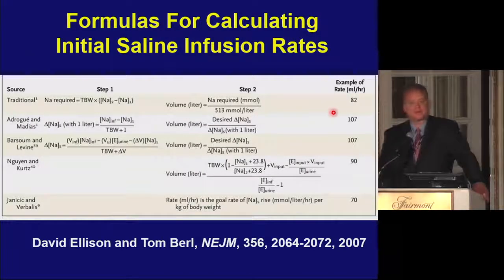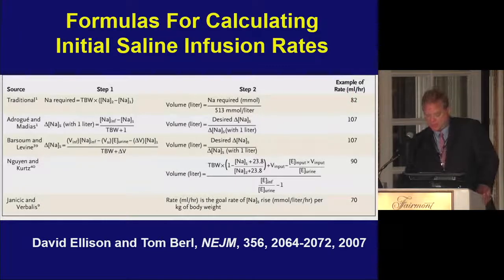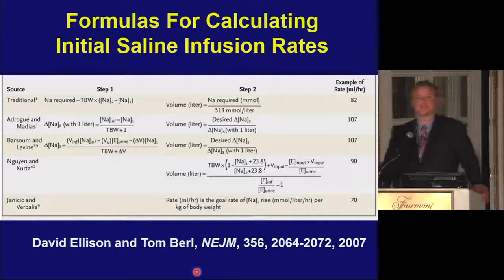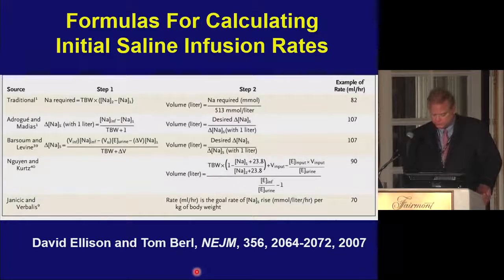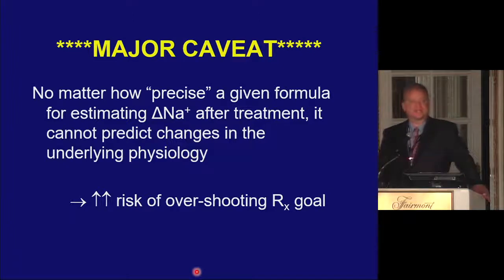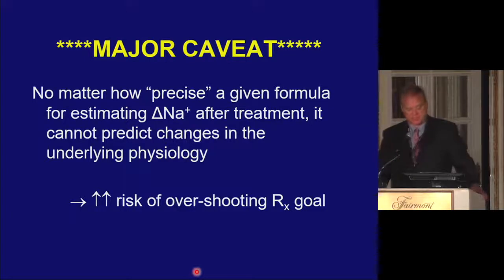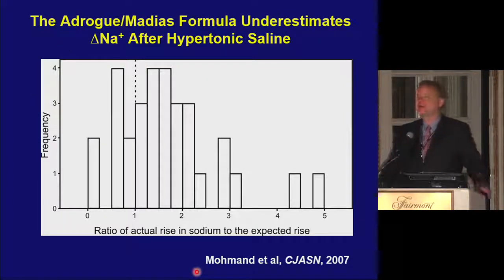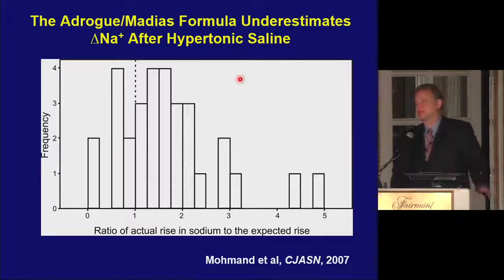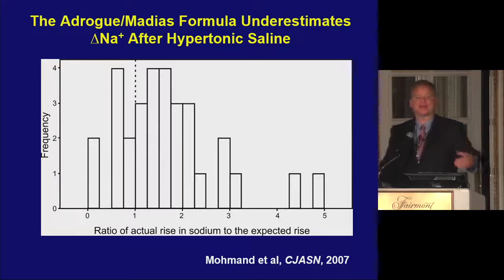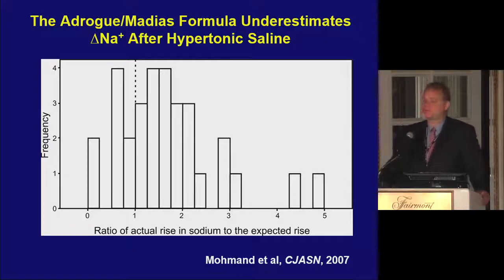For acute hyponatremia, the rate of correction is one to two milliequivalents per hour; only correct by four to six points to get them out of danger. For chronic hyponatremia, less than 10 milliequivalents in the first 24 hours and less than 18 in the first 48. There are quantitative formulas — the Adrogue-Madias formula, electrolyte-free water clearance, and urine-plasma electrolyte ratio — but major caveats apply: as shown by the Rochester group, patients can have a five times higher actual rate of sodium increase than predicted. The physiology is not static the minute you start treating. When giving hypertonic saline, I use the sodium deficit formula, lowball it a bit, then start treating the patient. Some advocate giving a single bolus of 100 mLs of 3% saline.